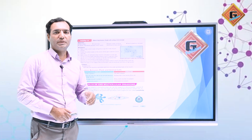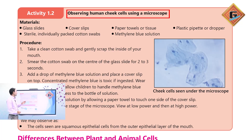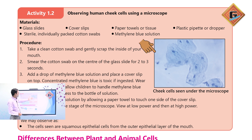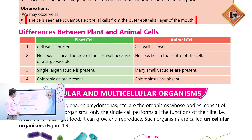Now we will do the cheek cell activity. We need a toothpick for the materials. When you look at the microscope, you can see some of these cells with their nucleus. The cells are seen as squamous epithelial cells from the outer epithelial layer of the mouth.